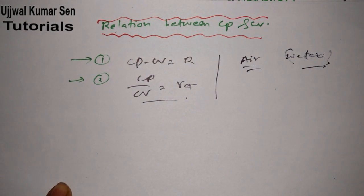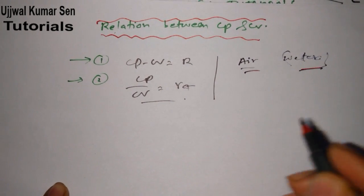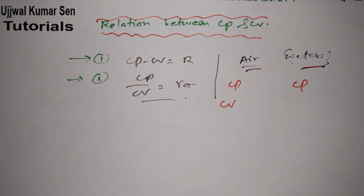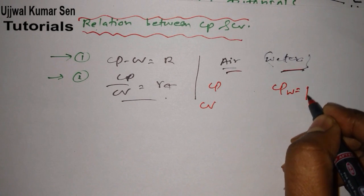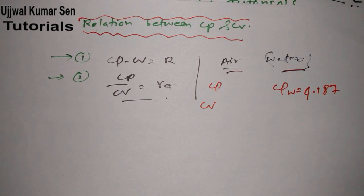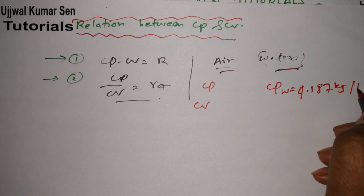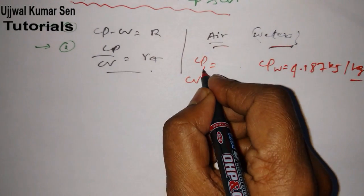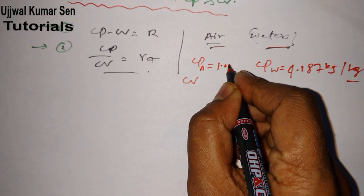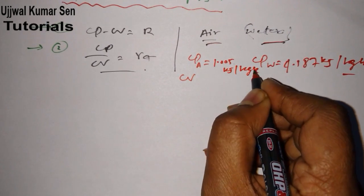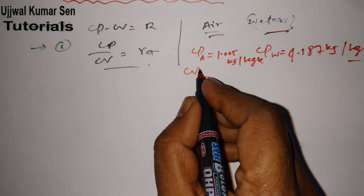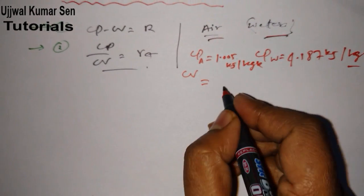Now there are two things for water and for air. For water we have CV is equal to 4.187 kilojoule per kg Kelvin. CP for air is 1.005 kilojoule per kg Kelvin. Don't forget to understand this.